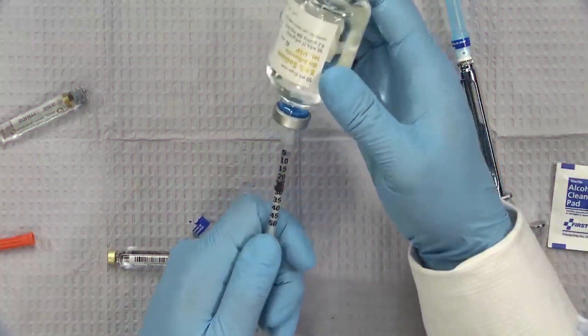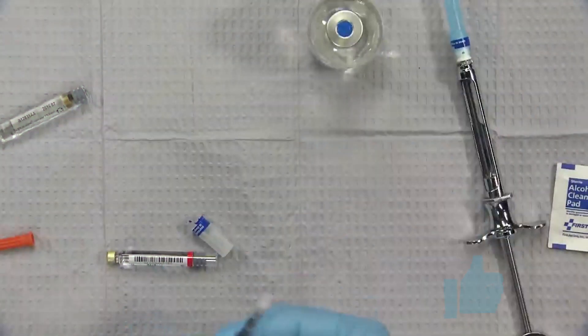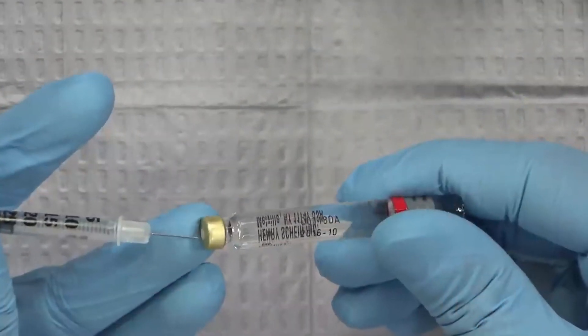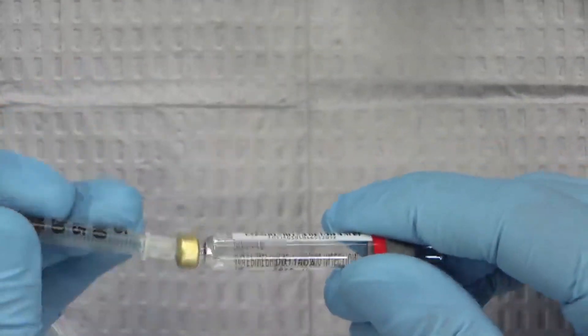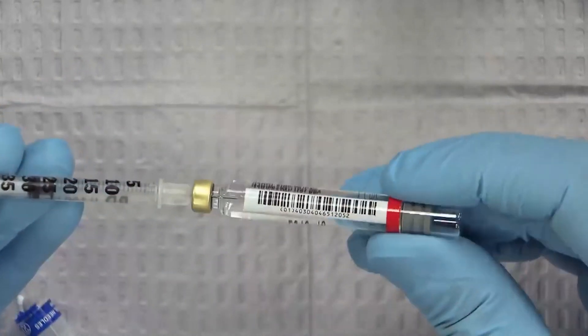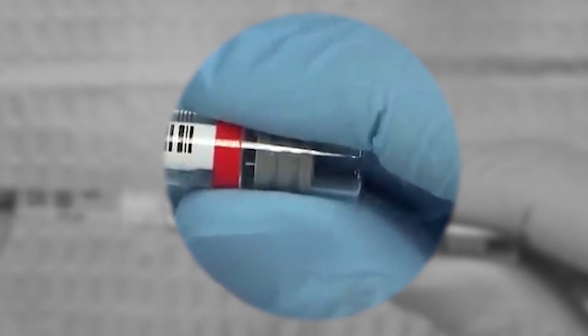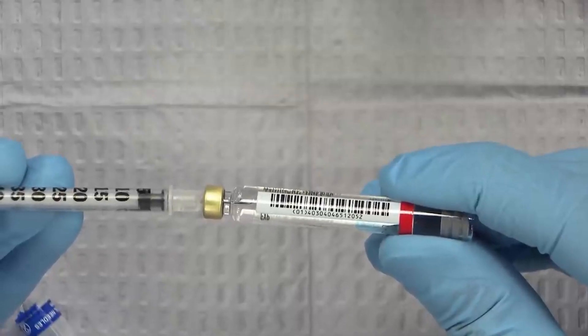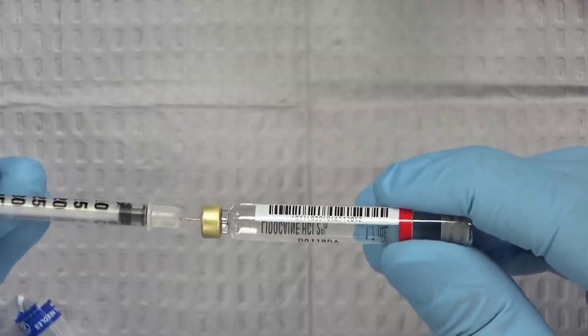So we have 25 units and now we can inject that back into our 2% lidocaine solution. And we're just going to push that right back into our syringe. And you'll notice as I inject this, the plunger starts to go back. And that's why we needed to make that space so we can have enough volume to buffer our anesthetic.